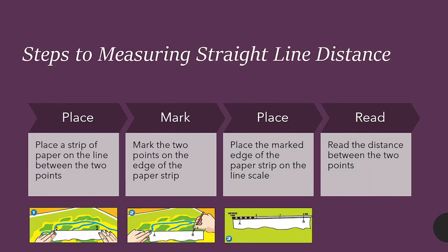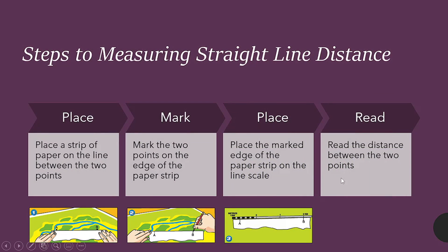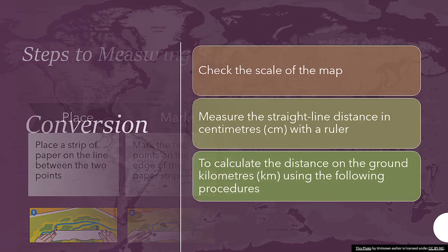Convert the distances you read on the scale because sometimes the scale is reading in kilometers and you will want to convert them in meters or whatnot. You will check the scale in the map first and see if it is in the measurement you want it to be in. And you would measure the straight line distance with a ruler that you have because when you are doing the exam you should have a ruler. And you would calculate the distance in kilometers using the following procedures.